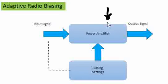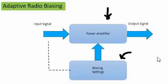We will focus on radio biasing. This biasing must be adaptive, meaning it must adjust to the corresponding situations such that the power amplifier can be used optimally and we have a low-power-consuming chip. That is the major criteria of adaptive radio biasing.